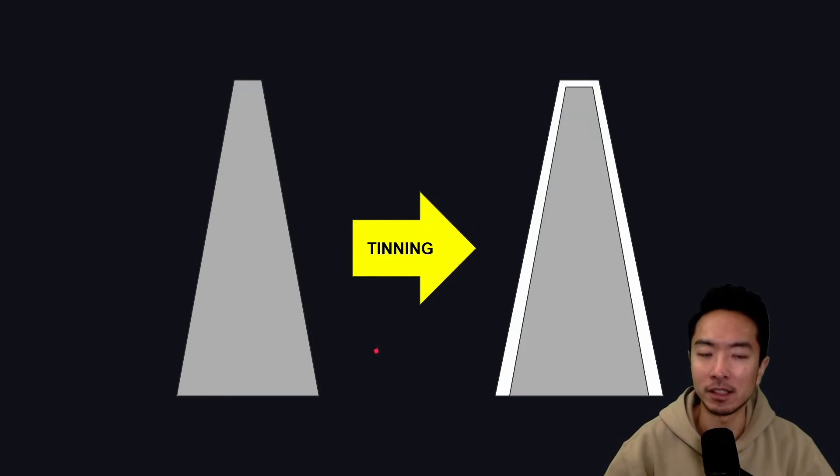The process of tinning is taking an uncoated iron tip and coating it with a thin layer of metal. This process is called tinning.